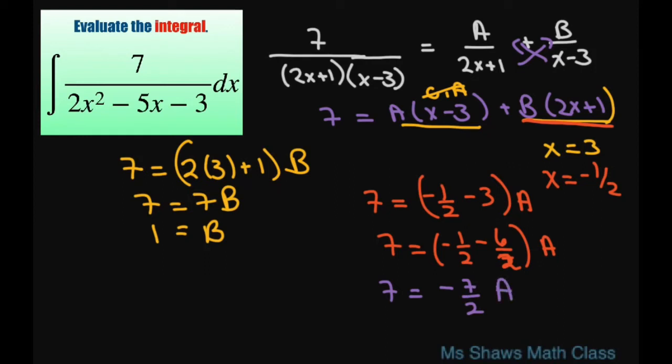So basically what we're going to get for A, you can just cross multiply here and then divide. So A is going to equal negative 2.